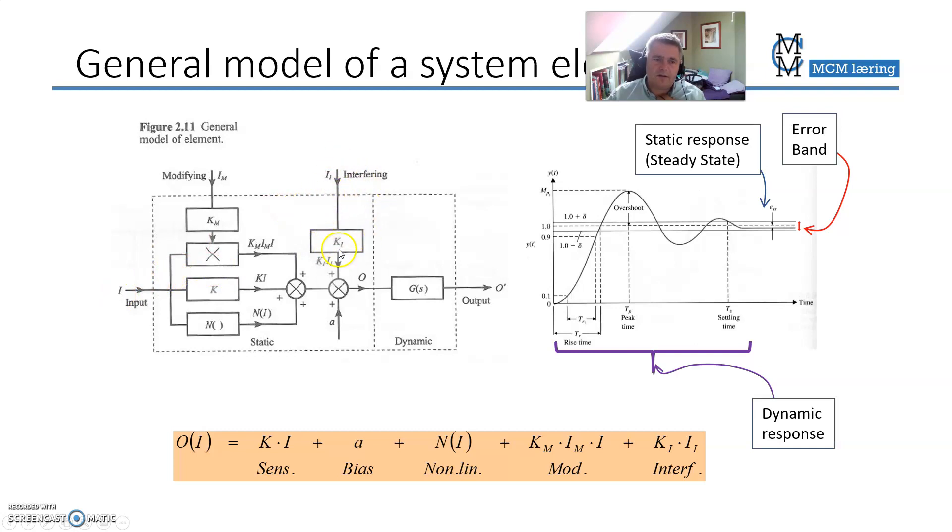So it adds to the system response as a whole, and then you have your output. This is the static output. This is the output you talk about here. But then you have an equation describing your dynamic response. How does these waves, how much overshoot do you have, how much undershoot do you have, how long will these waves go on for before we can read the data? If you want to describe that, that is done by a dynamic equation, also called the transfer function.